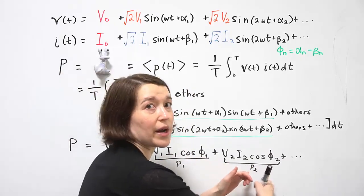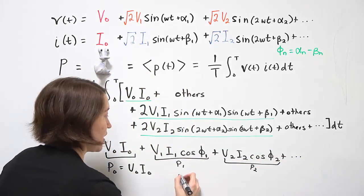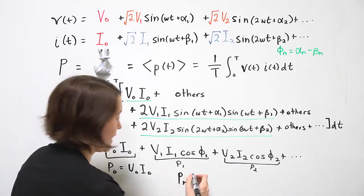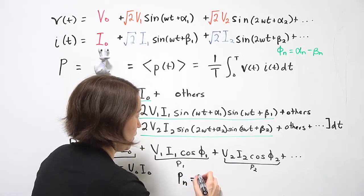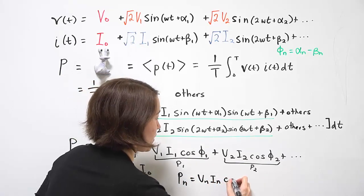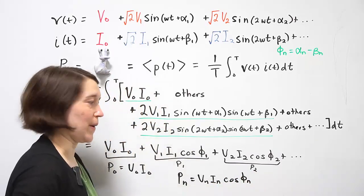So this would be the fundamental, this would be the second harmonic, third, fourth and so on. The general equation we can write for this is P of N. So power for the Nth harmonic is equal to VN, IN, and then cosine of the phase shift between those two for that component.